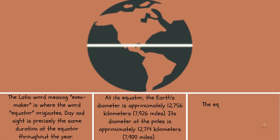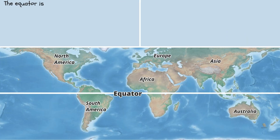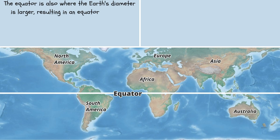The equatorial bulge of Earth is around 43 kilometers, or 27 miles, in diameter. The equator is also where the Earth's diameter is larger, resulting in an equatorial bulge.